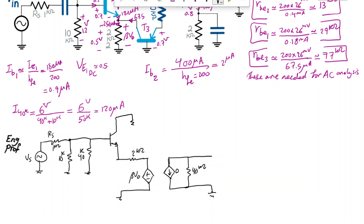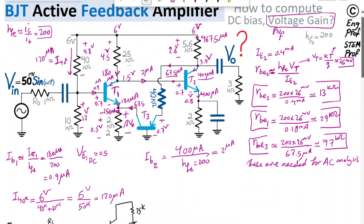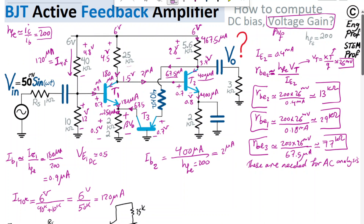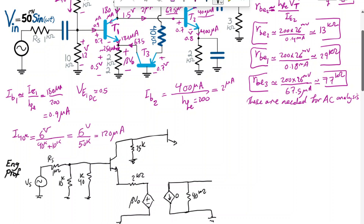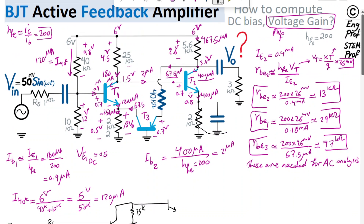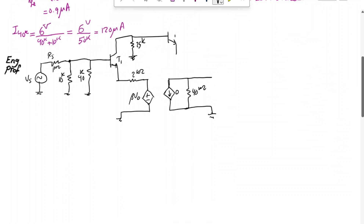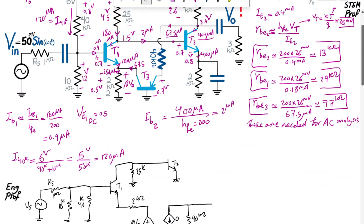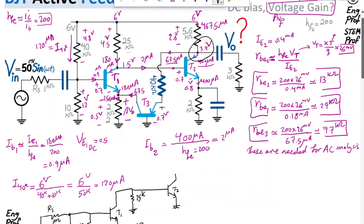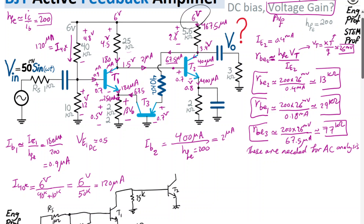At the collector of T1 we have 25 kΩ connected to the AC-grounded supply rail. This node connects directly to the base of T2. The emitter of T2 has a bypass capacitor that AC-shorts the 2 kΩ resistor at operating frequencies, making the emitter node an AC virtual ground.